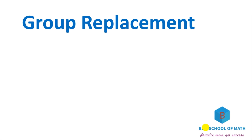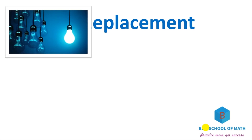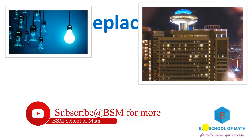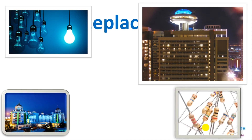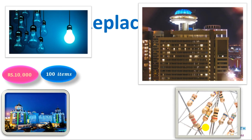Then group replacement: for example, there are bulbs in a hotel or a college — we have many bulbs. There are also resistors on computers, and so many other items. You can replace them for, say, 10,000. You can replace 100 items as a group.